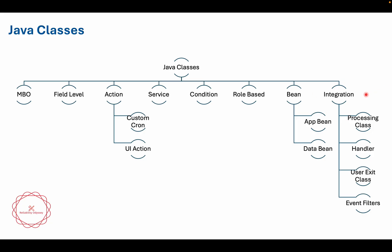The last type is integration, which is a big category with multiple different kinds of classes. For example, you have processing classes, handlers, user exit classes, and event filter classes. These classes are used to work with metadata structures like XML data, JSON structures, and MBO data, to filter or modify data at different layers. We will talk in detail about these when we cover integration classes.